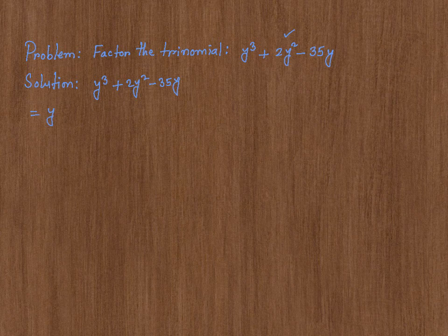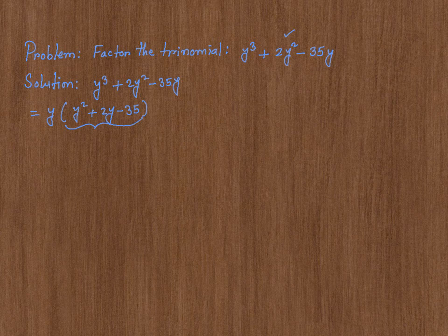I can factor out a y. If I did that, I'm going to get y squared plus 2y minus 35. Now, I'm going to factor this trinomial: y squared plus 2y minus 35.